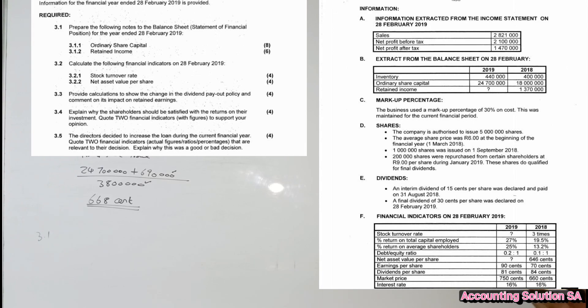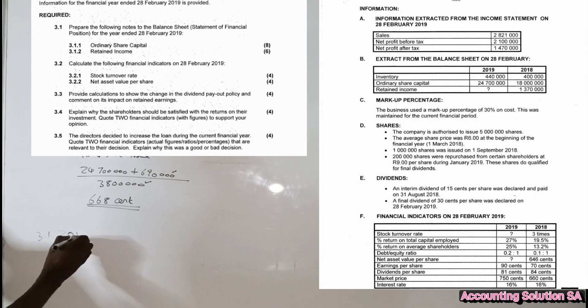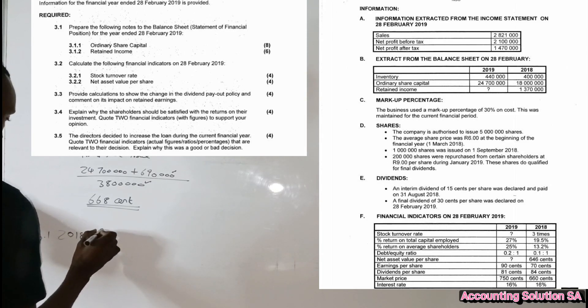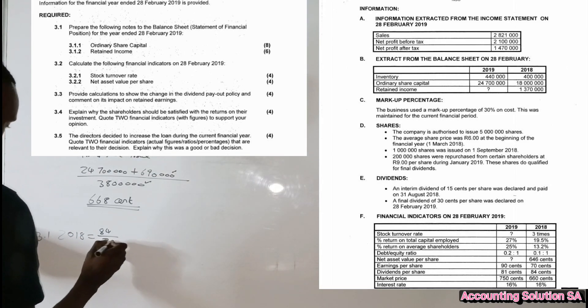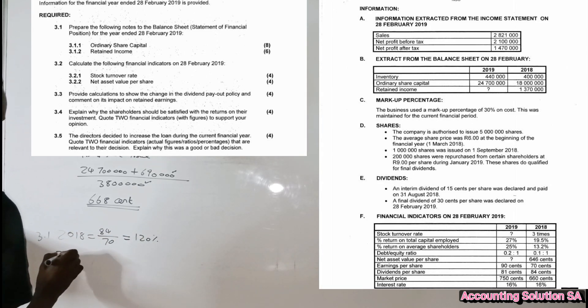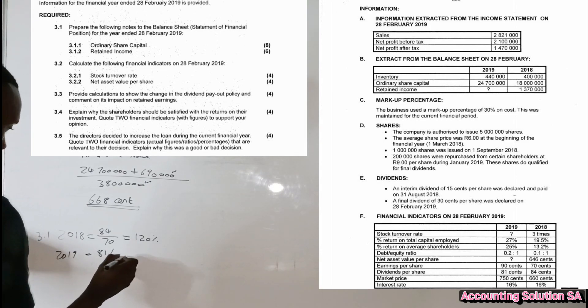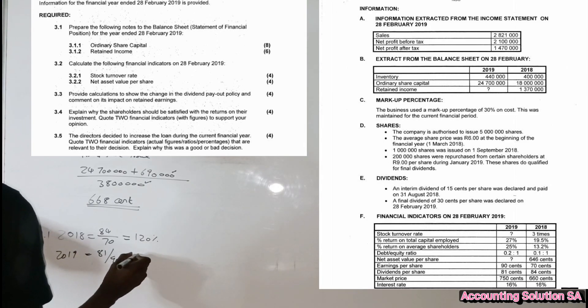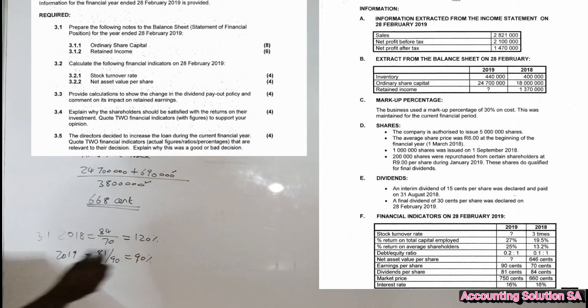You know the formula, so now we have to show the calculation and comment. For 2018, dividends per share it was 84 cent, and we divide by earnings per share of 70 cent. Then it's gonna give us 120 percent. Let's show the for 2019. 2019 is 81 cent and we divide by 90 cent, it's gonna give us 90 percent. Very simple.